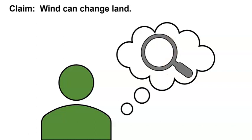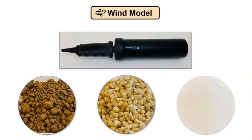I wonder, how can we gather evidence to support our claim that wind can change land? I know, let's investigate. How should we start our investigation? Let's make a wind model. I have some materials here to use in our model.